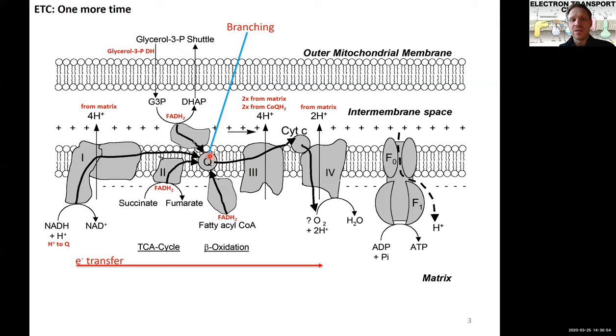Everything now culminating in complex 3, so all the electrons from CoQ will end up there. Complex 3 will transfer them over to a mobile protein, a heme-containing cytochrome, cytochrome C. That will hand over the electrons to our final complex, complex 4. And this complex now will transfer the electrons as a final redox reaction to our terminal acceptor oxygen. We're generating water. We're finalizing the electron transfer all the way.